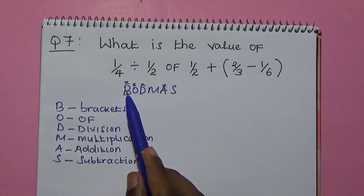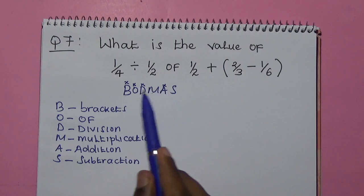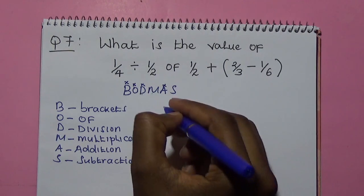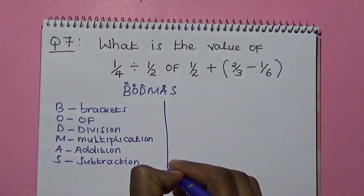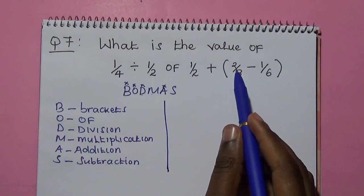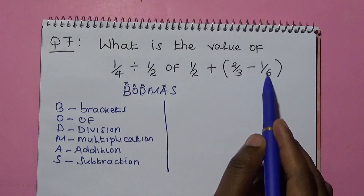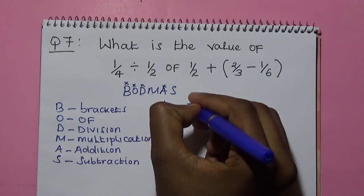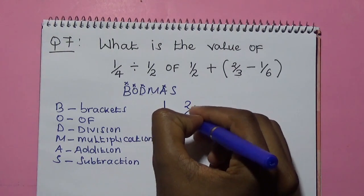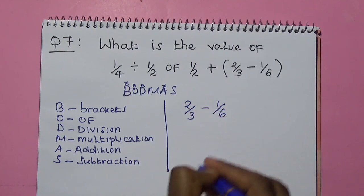Therefore, when we use BODMAS, we follow this order. We are going to start with the brackets. What we have in the brackets is 2 over 3 minus 1 over 6.